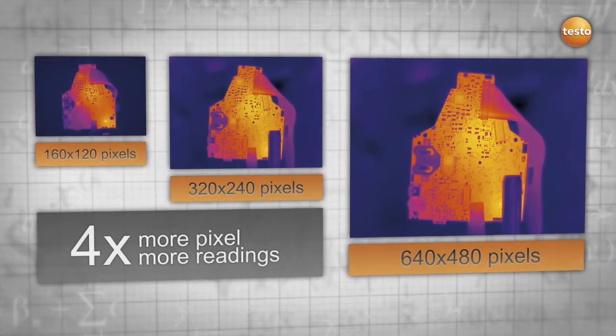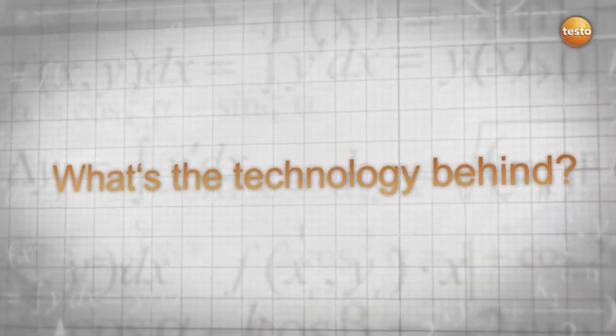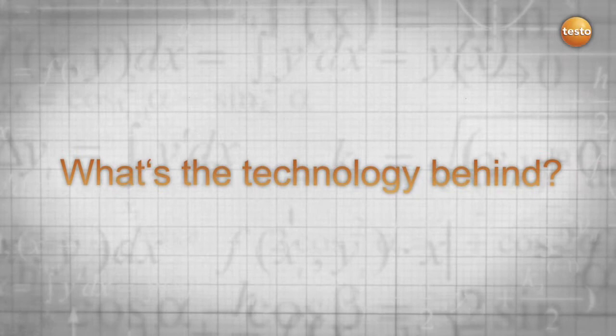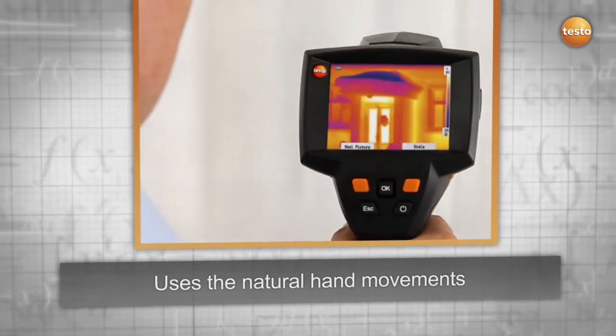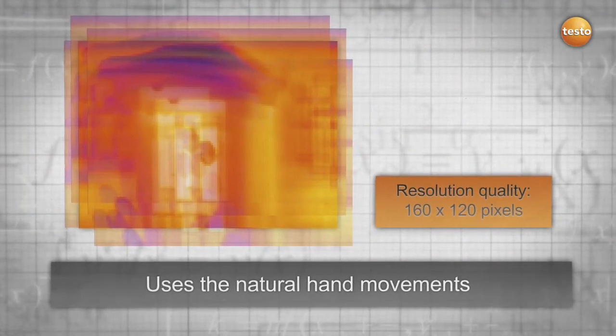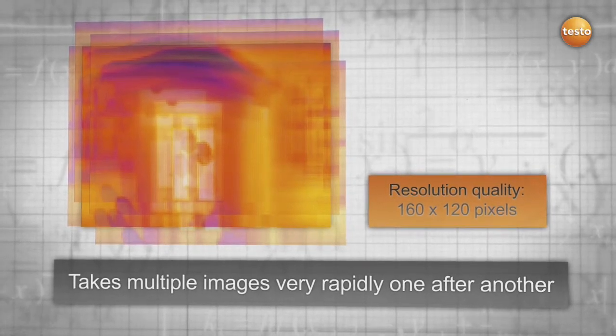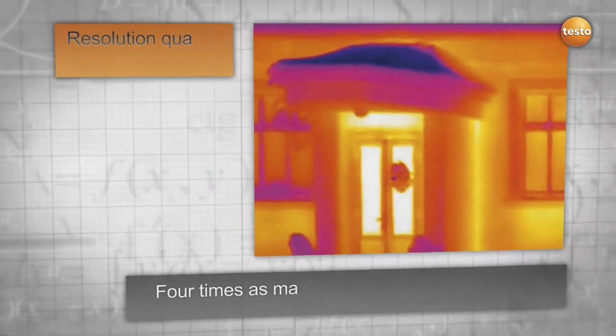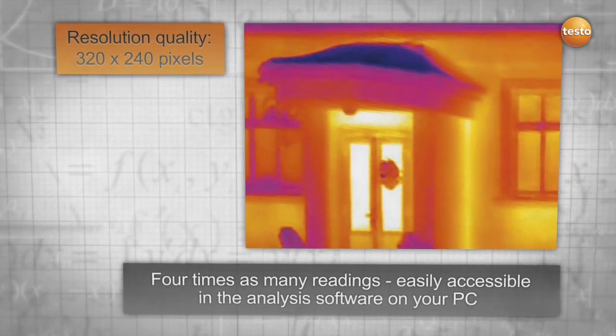The Super Resolution technology uses natural hand movement and takes multiple images rapidly one after another, which are slightly shifted to each other. Using an algorithm, these images are then calculated to obtain one image. The result: four times as many readings and a much better thermal image resolution.